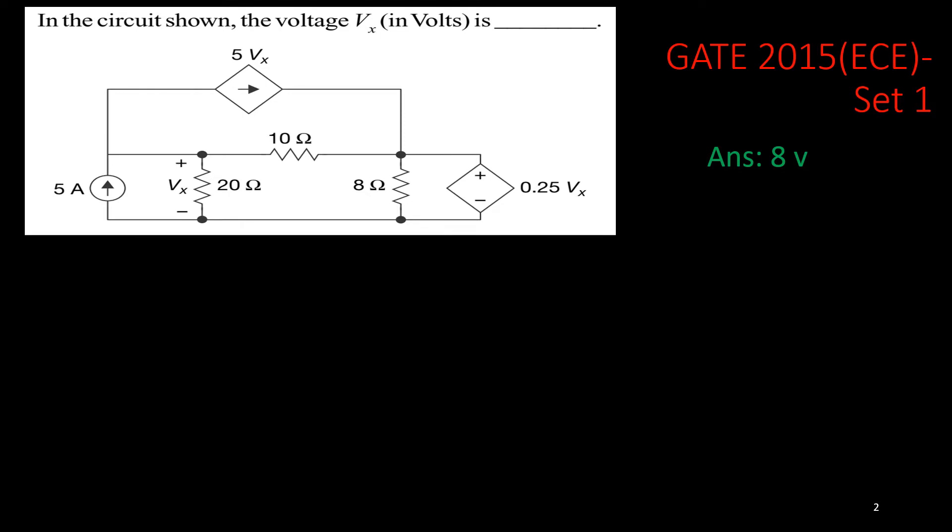And you look at the problem. In this circuit, you will see there is one current source 5 ampere, the independent current source, but the circuit will contain two dependent sources. One dependent current source, depending on the voltage across this 20 ohm resistance, and another dependent voltage source.